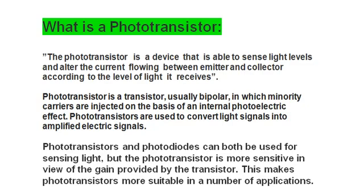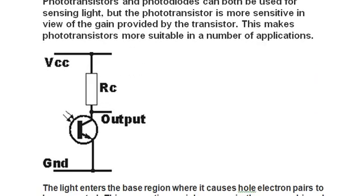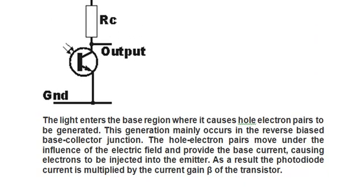Now we want to discuss the phototransistor operation. This is the circuit of the phototransistor. The light enters the base region where it causes electron-hole pairs to be generated. The generation mainly occurs in the reverse bias condition, so the electron-hole pairs move under the influence of the electric field and provide the base current, causing the electrons to be injected into the emitter. As a result, the phototransistor current is multiplied by the current gain β of the transistor.